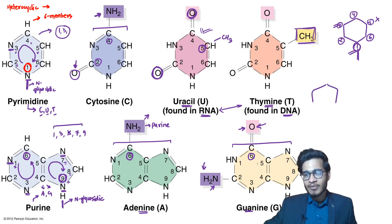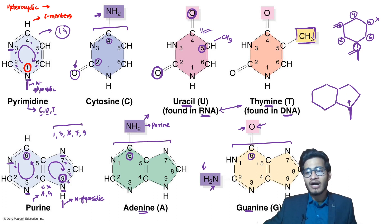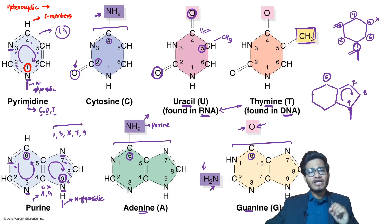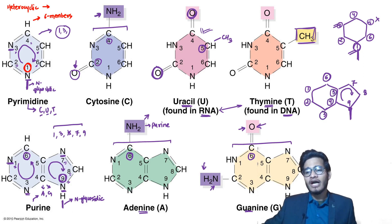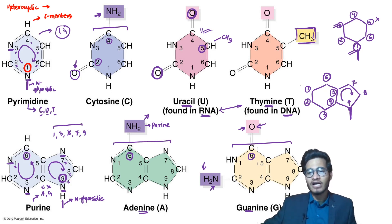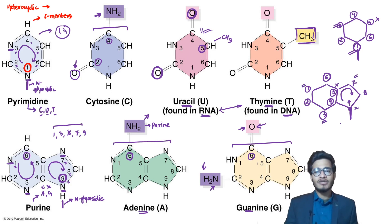For purines, draw the six-membered ring and the five-membered imidazole ring. Position 9 (which forms the glycosidic bond) is at the bottom of the imidazole ring, so count 7, 8, 9 clockwise. Position 6 is at the top of the six-membered ring, so count 1, 2, 3, 4, 5 anti-clockwise, with 4 and 5 common to both rings. Add nitrogen at positions 1, 3, 7, 9 (all odd numbers except 5). This gives you the complete purine structure.